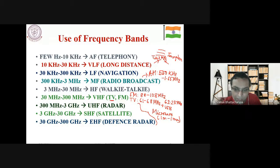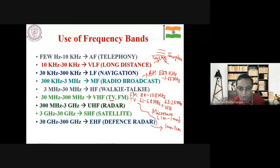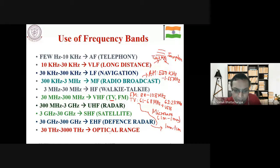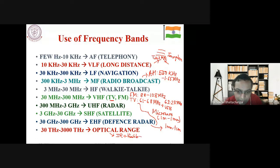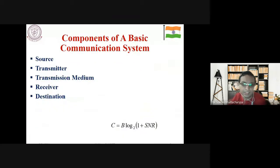Channel capacity is also critical. As per Carson's rule, bandwidth is approximately 10% of the carrier frequency fc. So as fc increases, bandwidth increases, and by Shannon's channel capacity formula C = B·log₂(1 + SNR), channel capacity also increases. This means you can accommodate more channels over a single medium — that is the key advantage of going to higher frequencies.